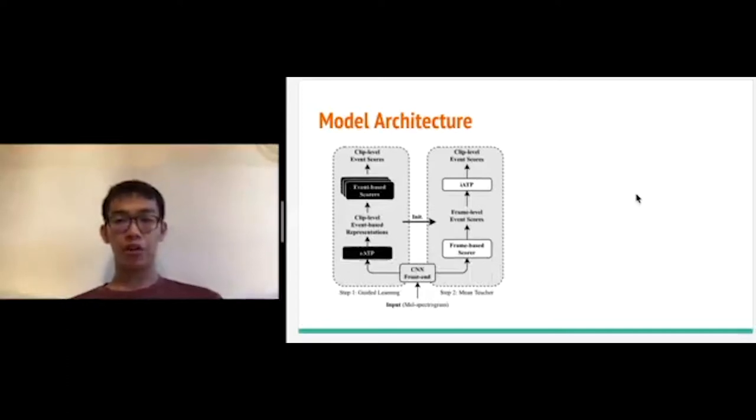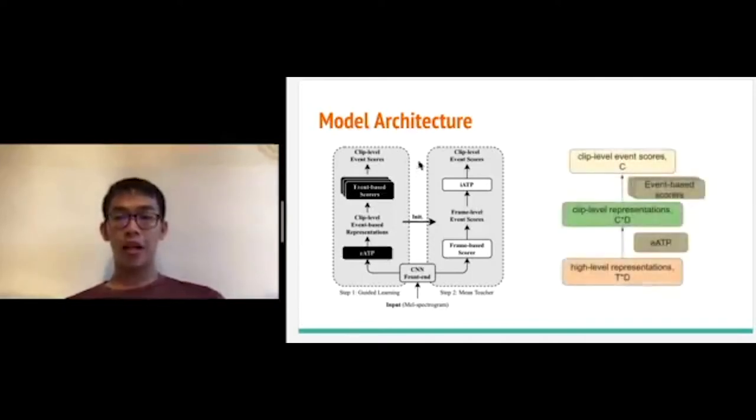So next, we will introduce two different ways to get the clip-level event scores. This is the embedding-level attention pooling and the instance-level attention pooling. Basically, the embedding-level pooling means we first compute the attention weights on the frame-level representation for each event. And according to these attention weights, we do weighted sum to get an event-wise clip-level representation. This process is called the embedding-level attention pooling.